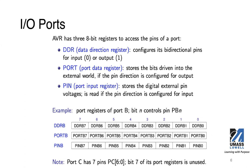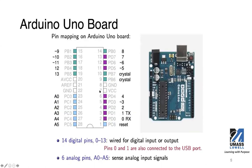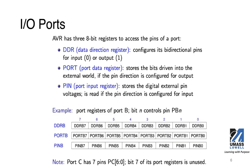This is how we use three registers for each port to control the direction of transfer, set up the output value, or read the input value. This is a very typical pattern used in different microcontrollers. PIC microcontrollers have exactly the same design — just slightly different register names — but they also have a direction register, one register for output, and another for input.